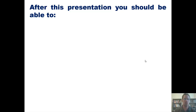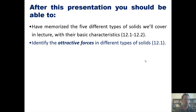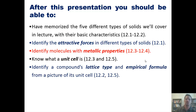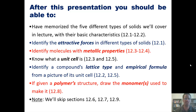After today's presentation, you should be able to memorize the five different types of solids that we'll cover in lecture with their basic characteristics, identify the attractive forces in those different types of solids, identify molecules with metallic properties, know what a unit cell is, identify a compound's lattice type and empirical formula from a picture of its unit cell, and if given a polymer structure, draw the monomers used to make it. Please note that we will skip sections 6, 7, and 9 from the text.